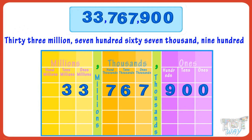So kids, we just have to read a number in every period and name it with the period name. If you know how to read a three-digit number and know the period names, you can read any number. After every three digits from the right, there is a comma, and each comma has a name: the name of the first comma from the right is thousands, and the name of the second comma from the right is millions.